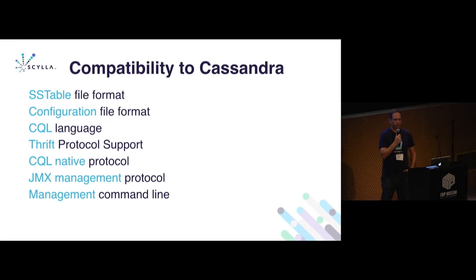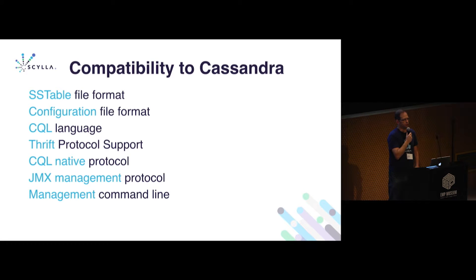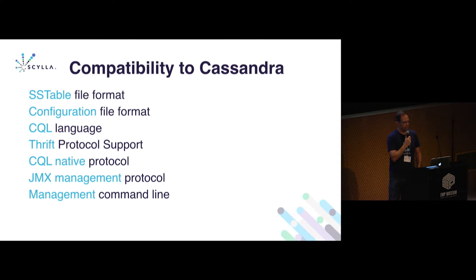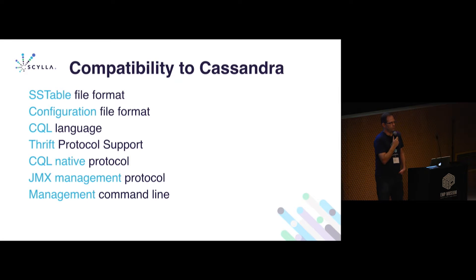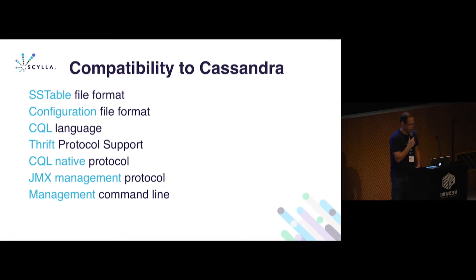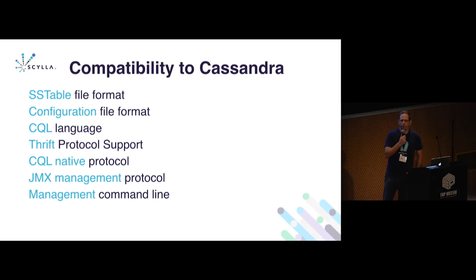In terms of configuration file format, as I said, we take the Cassandra YAML file — 90% of it goes to the trash, and the remaining 10% that really matters we use to make sure you're configured correctly. Same JMX tooling, plus we've added a REST API to manage and control Scylla, so you don't need any Java component in your environment if you don't want one. The same nodetool you're familiar with from Cassandra will work here as well.